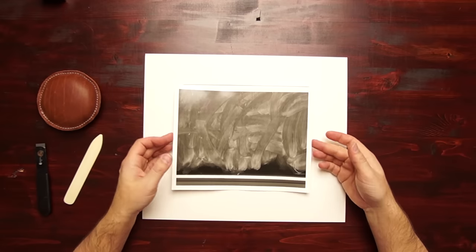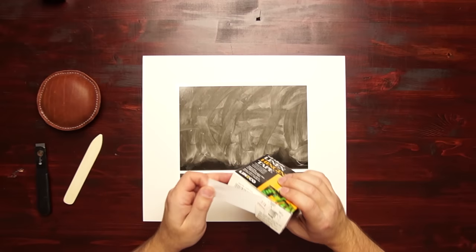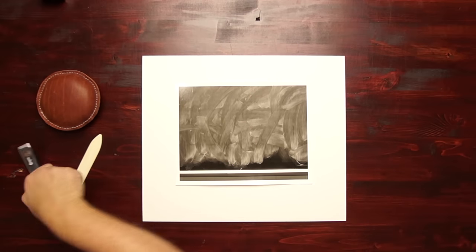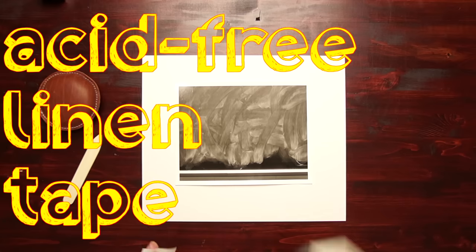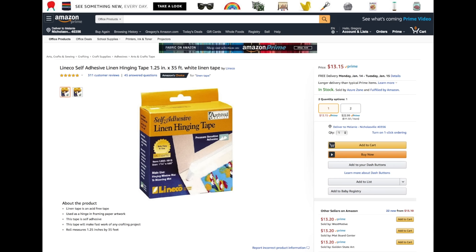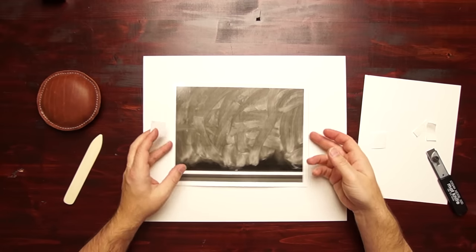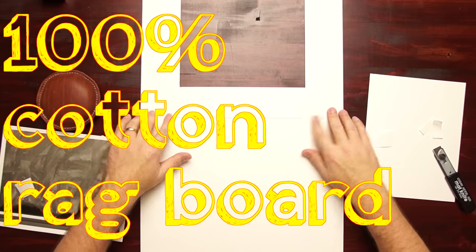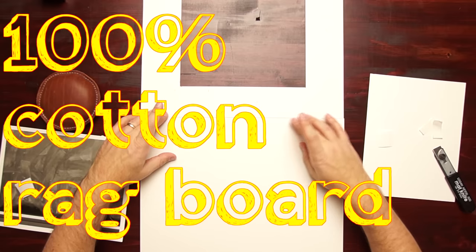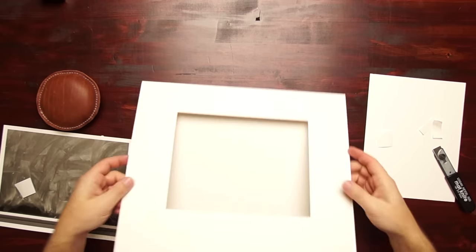So first method is taping directly to the window mat. To do that, what I'll do is take some of this linen tape. I'll cut it in half and get two pieces. My window itself has been taped to a piece of mount board. Just line it up, put the tape down, and fold it over.